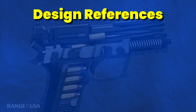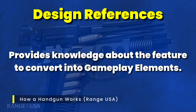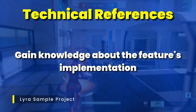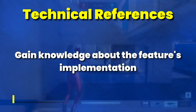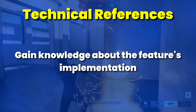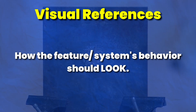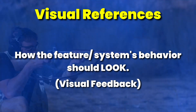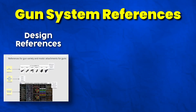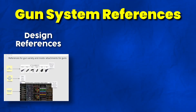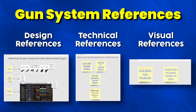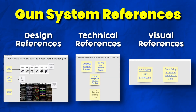Next, find references that provide the same or similar experience that you intend for your feature. This can be anything from existing games, movies, YouTube videos, or Wikipedia pages — whatever you can use to get more information. I like to categorize references into three types: design references, which provide knowledge about the systems you're designing to convert into gameplay elements; technical references, for gaining knowledge on how your system would actually be implemented in the game; and visual references, for how the system's behavior should look — specifically the visual feedback the player receives. I collected gun stats and attachment info for design references, sample Unreal Engine projects and tutorials for technical references, and videos of firing guns in games and real life for visual references.